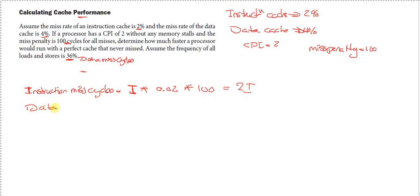For the data miss cycles, we're calculating the number of instructions per program times the miss rate of the data cache times the frequency of the load and store operations times the miss penalty. That all would be equal to 1.44I.